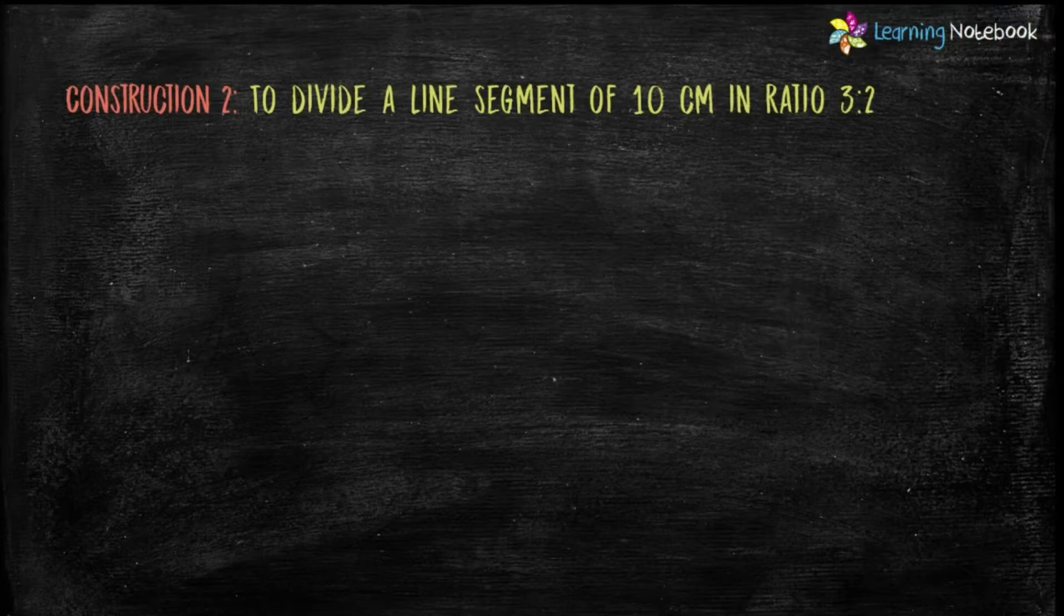Let's start and do construction number 2, which is to divide a line segment of 10 cm in ratio 3 is to 2.